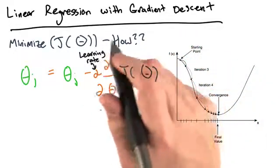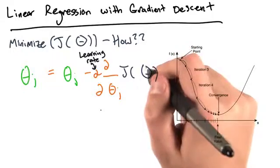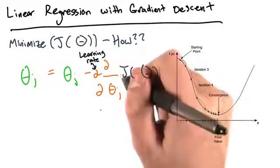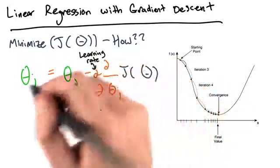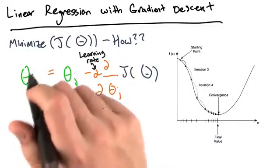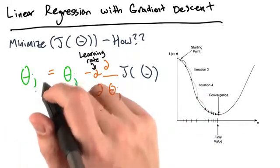I'm not going to go into the calculus here, but based on our cost function J of big theta and the dependence it has on all of these various theta j's, if we were to actually perform this differentiation, the actual equation that we'll use to update our theta values is this.